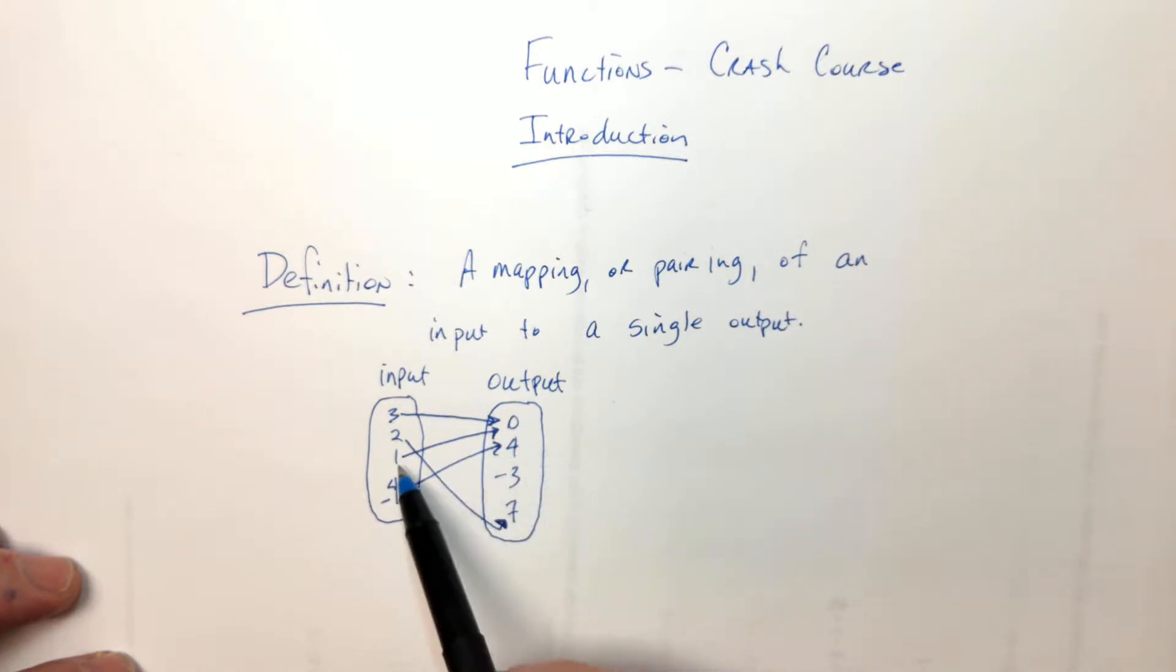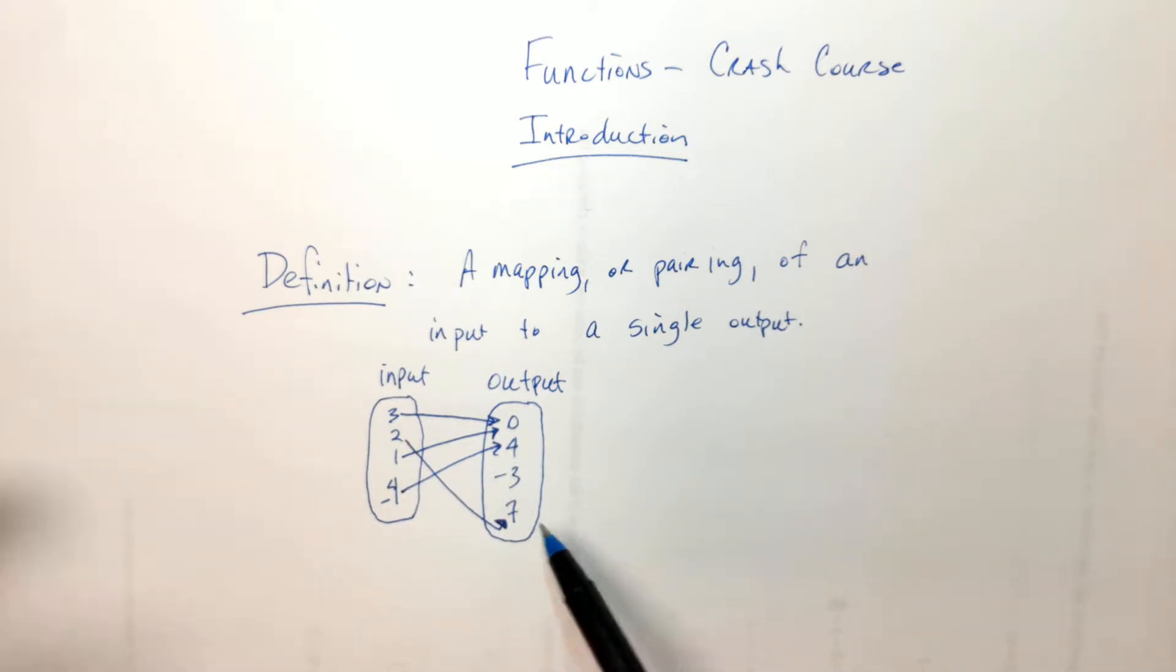And 4 goes to one number. So negative 4 goes to 4, 1 goes to 0, so does 3, and 2 goes to 7. That's a function.